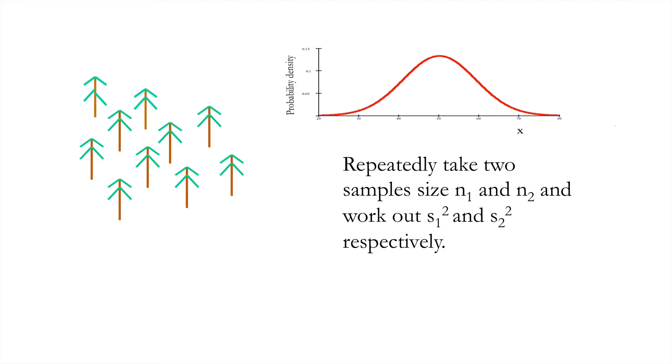So what is the F distribution? Imagine that we've got a population of trees with normally distributed heights. Most of them are around 50, some are a bit bigger, some are a bit smaller. What we're going to do is have a thought experiment in which we repeatedly take two samples, sizes N1 and N2, and in each case work out the best estimate we can of the population variance, S1 squared and S2 squared, from those samples. Clearly they are estimating the same thing, so you would expect them to be very similar. But by chance, one of those estimates can be higher than the other. So let that ratio, S1 squared to S2 squared, be F after Fisher.